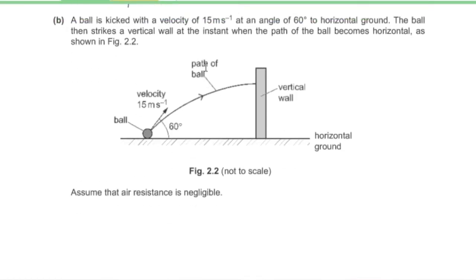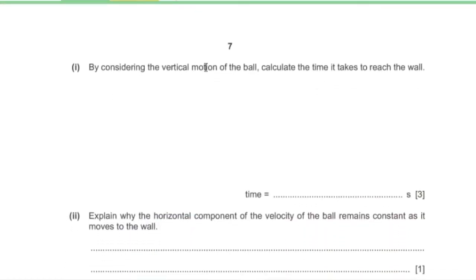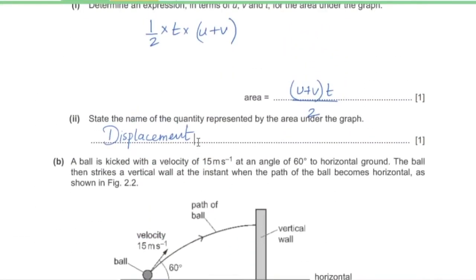Part B: a ball is kicked at 15 m/s at 60° to the horizontal. It strikes a vertical wall at the instant its path becomes horizontal, as shown in figure 2.2. Air resistance is negligible. By considering vertical motion, calculate the time to reach the wall.